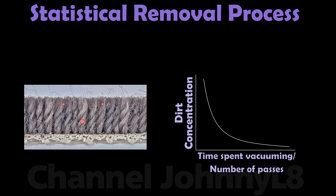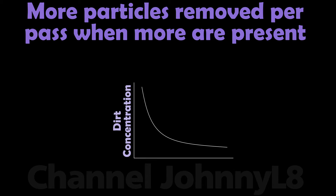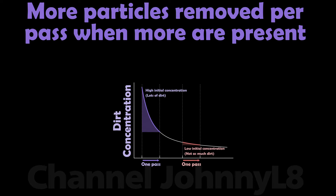Some particles remain trapped in the complex network of fibres and get left behind. No matter how good a vacuum is, and even with many passes, there will always be some particles left in the carpet, particularly those deeper down that encounter more resistance in the removal process. It may take many passes, equating to many separate cleaning sessions, to reduce concentration to lower values which would be classified as clean. The total number of particles removed in a pass is dependent on the number that are there — so the more particles there are to start with, the more that will be removed in that pass.